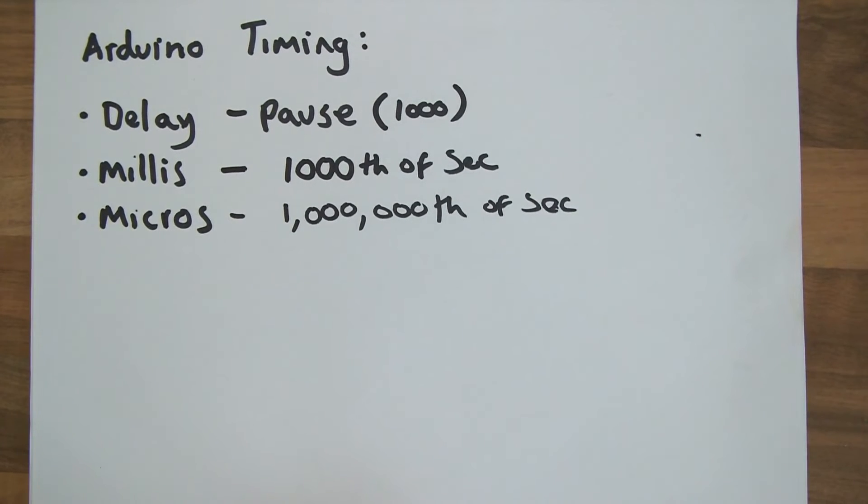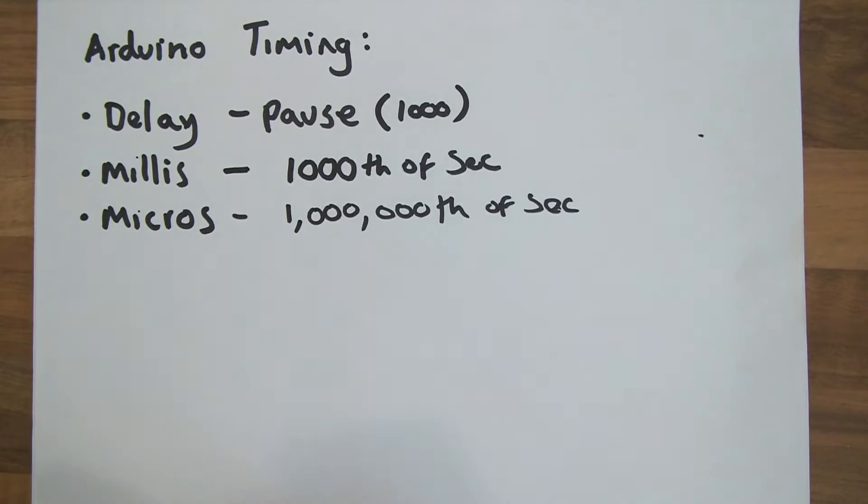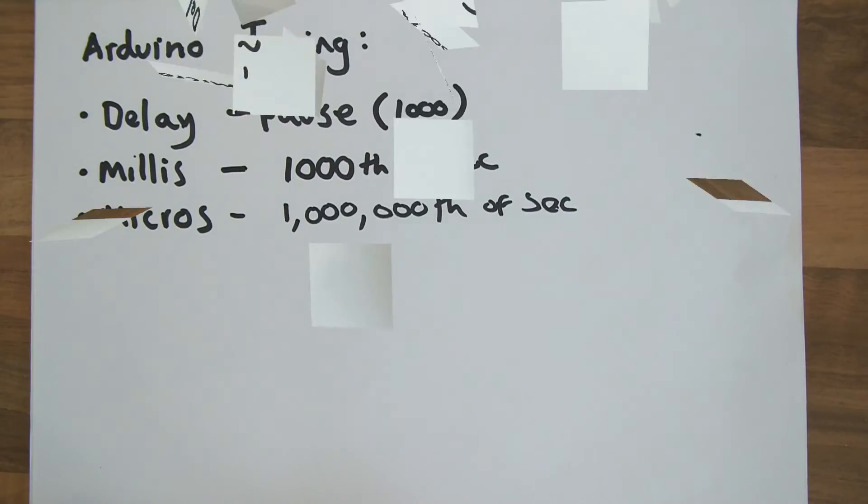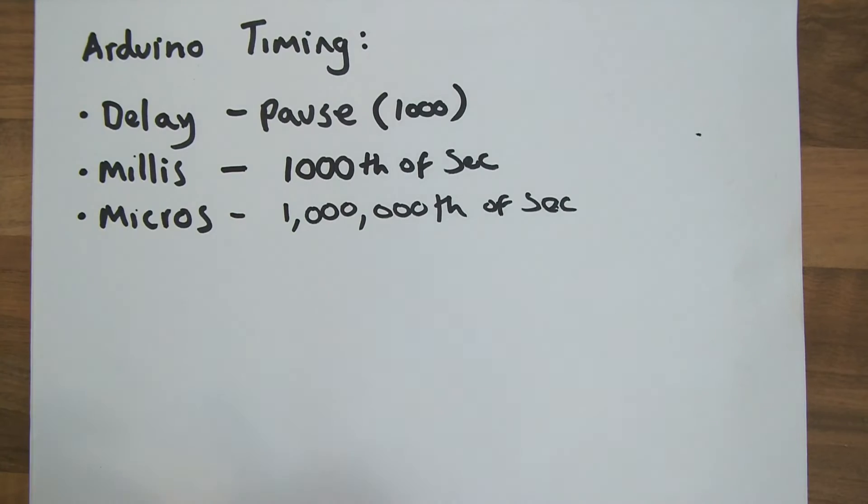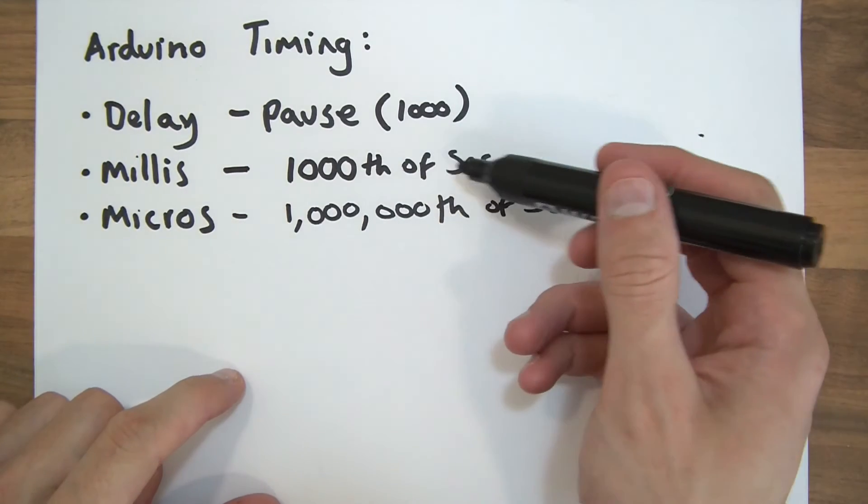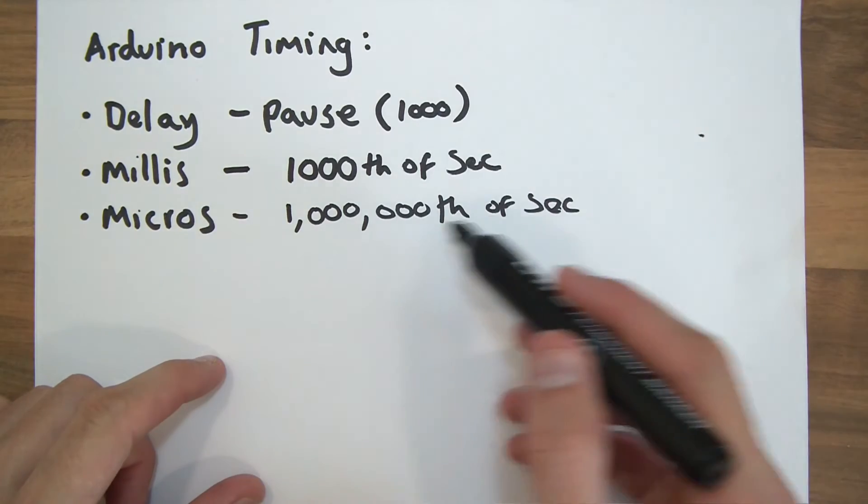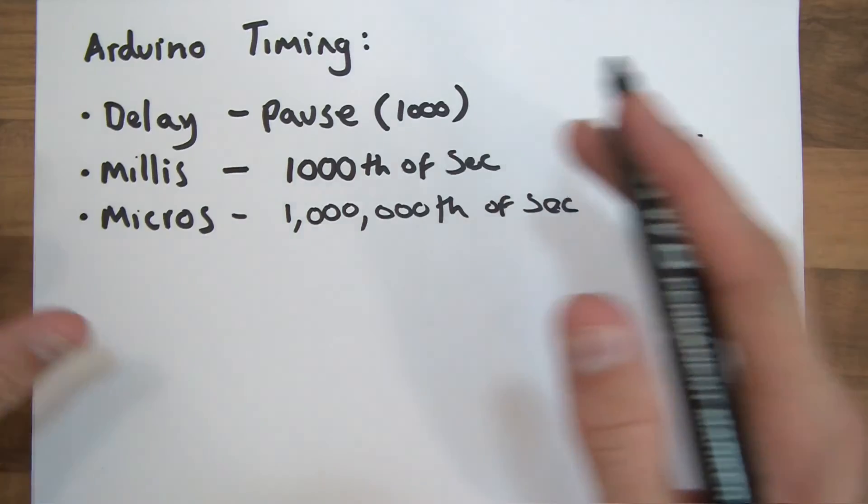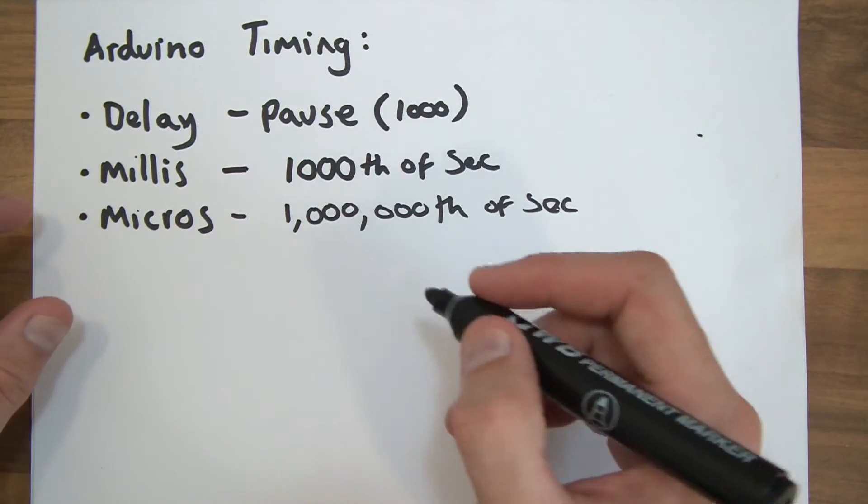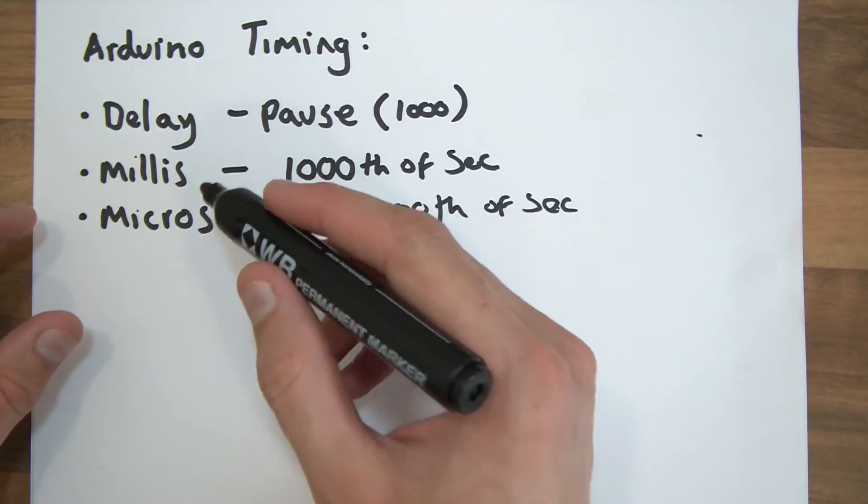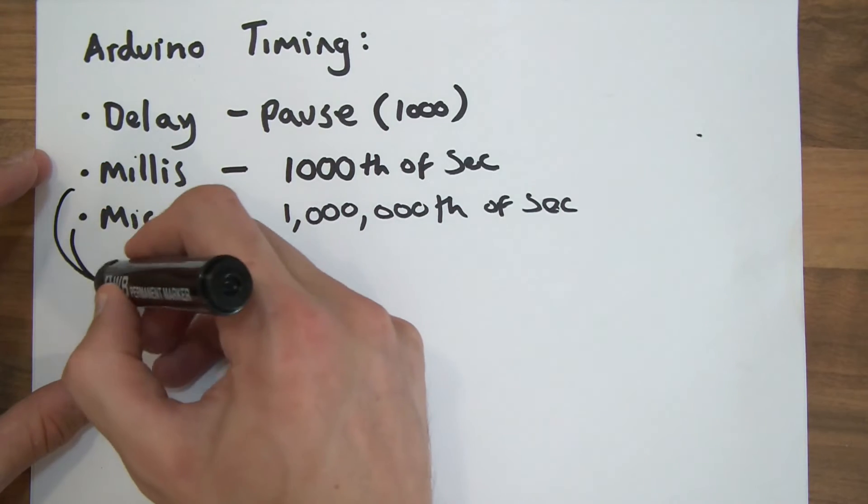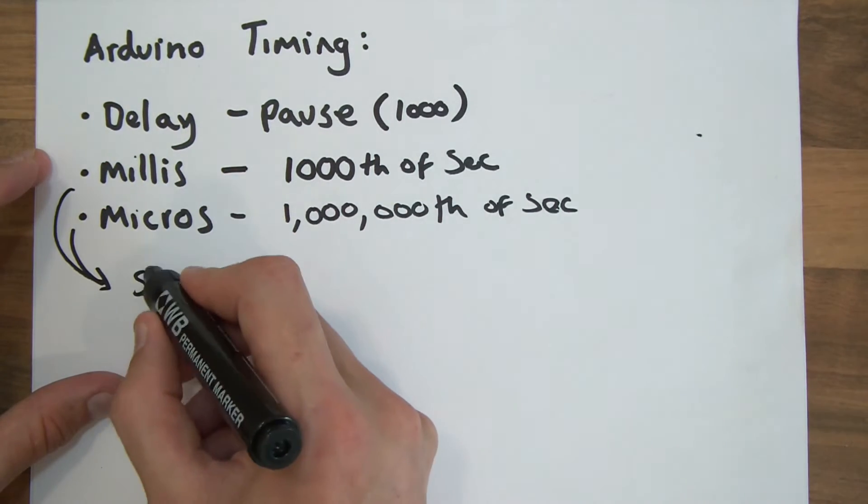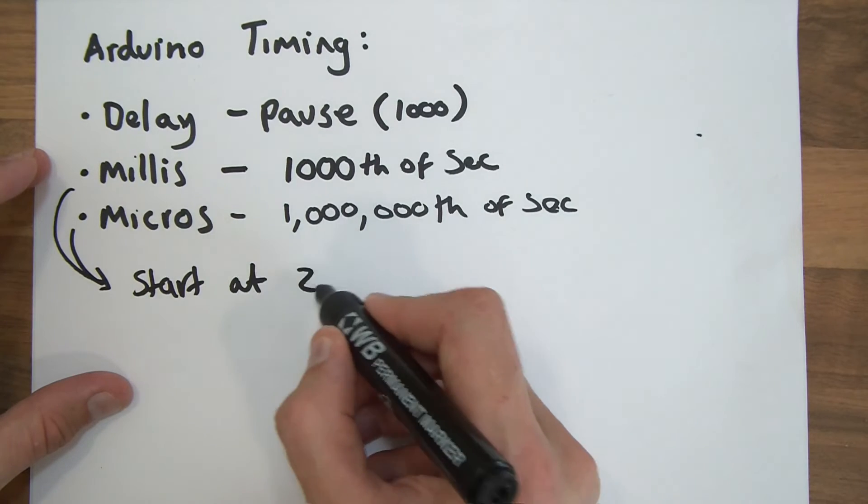So when it comes to timing, if you want any reliable timing algorithm in the Arduino, you really need to be using millis or micros. So to start with, what are these? So okay, millis is a millisecond, a thousandth of a second, micros is a millionth of a second. Okay, but from when though? It's from the start of the Arduino. So when the program first starts running, this value is zero. So these two start at zero.